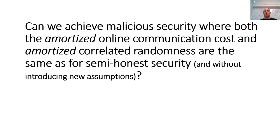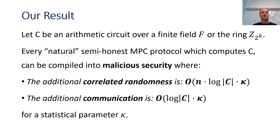This raises the following question: can we achieve malicious security where both the amortized online communication cost and the amortized amount of correlated randomness are the same as with semi-honest security, and of course without introducing any new assumption? In this work, we give a positive answer to this question. Our main result is the following: given an arithmetic circuit C defined over a finite field or over the ring of integers modulo 2^k, we can take every natural semi-honest MPC protocol which computes C and compile it into malicious security where both the additional communication and the additional correlated randomness are logarithmic in the size of the circuit times some statistical parameter kappa. This implies that amortized over the circuit, both the communication cost and the amount of correlated randomness per multiplication gate remain the same as for semi-honest security.